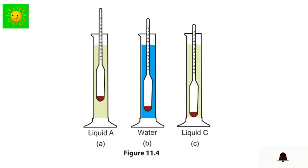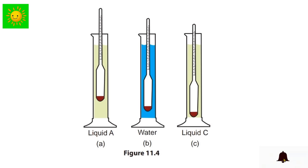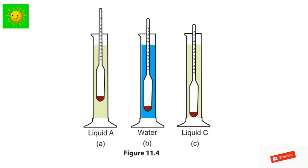This figure shows hydrometers floating in three different liquids. Figure B shows it floating in water. The immersed length of the hydrometer is less in liquid A than in water, indicating that the density of liquid A is higher than that of water. The immersed length is more in liquid C than in water, so the density of liquid C is lower than that of water.